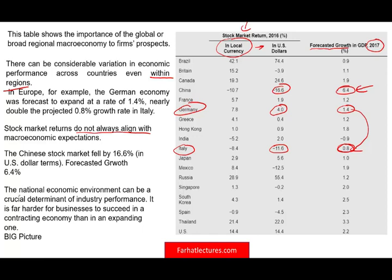It is far harder for a business to succeed if the economy is contracting rather than expanding. For example, if a country like India has a forecast of only 0.9% growth, or is experiencing constant contraction, you may not want to move investments into those economies. So you want to look at the big picture first from an international perspective, then a regional one.